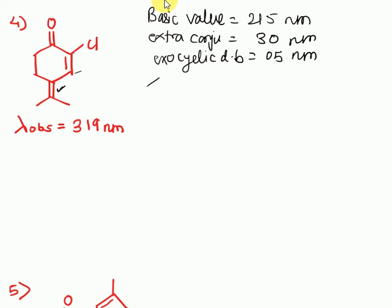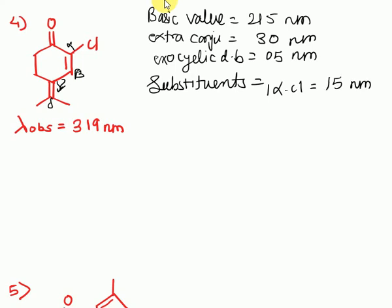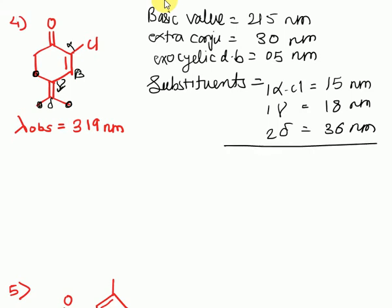Now for substituents: alpha, beta, gamma, and delta. There is one alpha chlorine, which contributes 15 nanometers. Then no beta substituent. One gamma substituent contributes 18 nanometers and two delta substituents contribute 36 nanometers. After totaling, the lambda calculated is 319 nanometers.